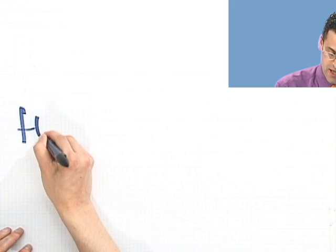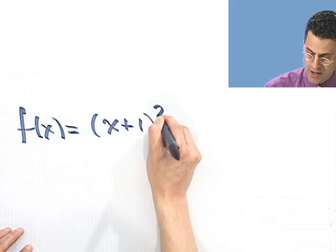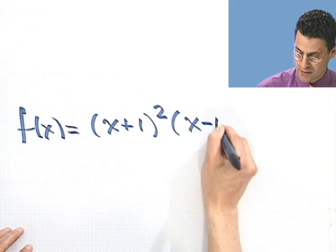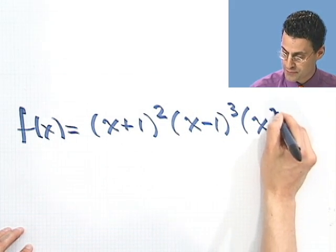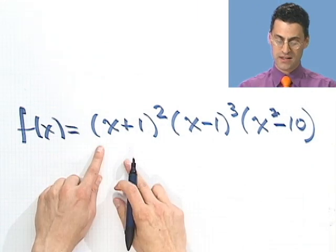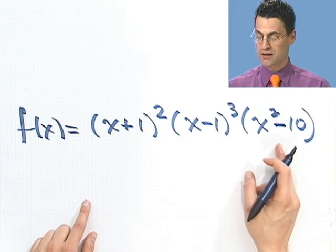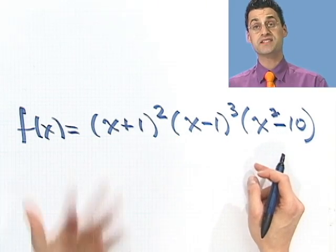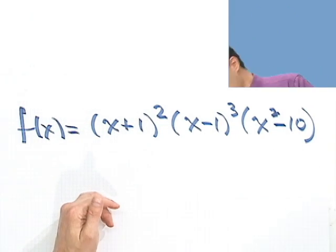One last example. This one's real easy, so don't worry about it. Suppose I just tell you that I have a function f of x and I give it to you in factored form. And I want you to find the zeros of this polynomial but also the multiplicities. So there it is: x plus 1 squared times x minus 1 cubed times x squared minus 10. To find the zeros, I set that whole thing equal to zero.